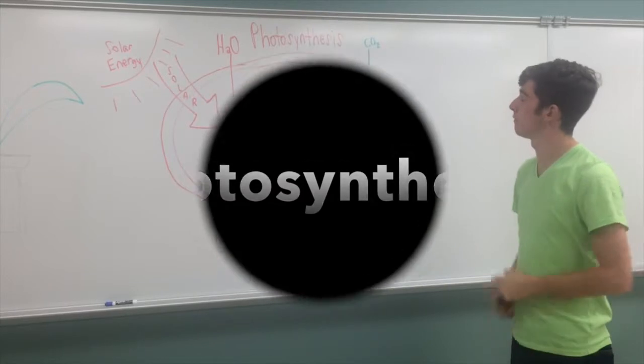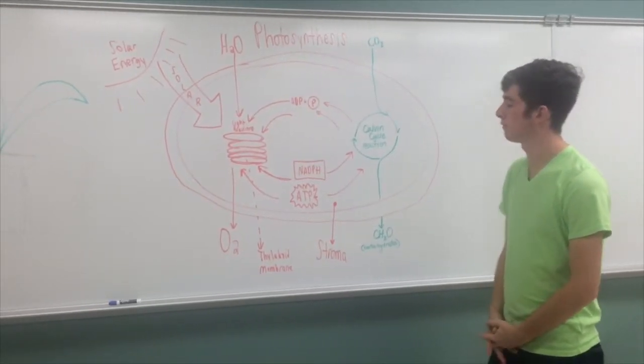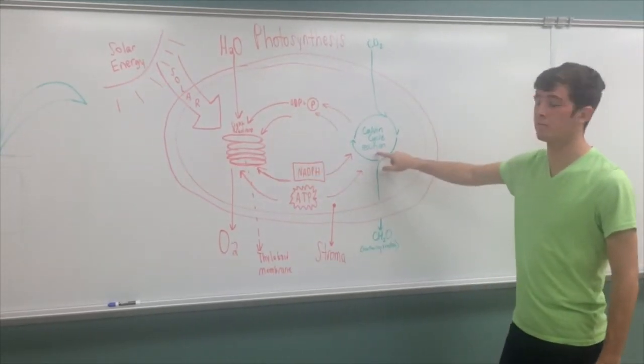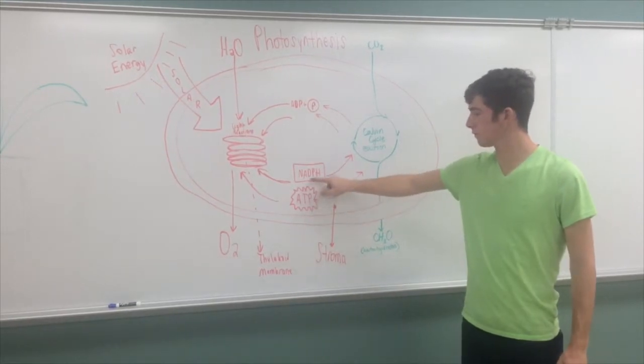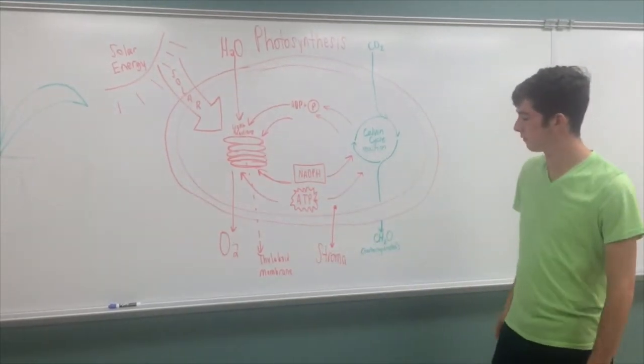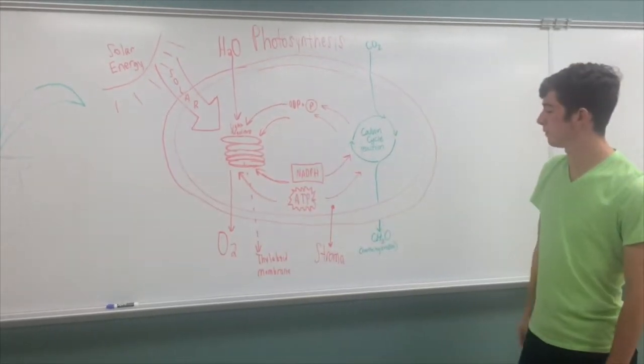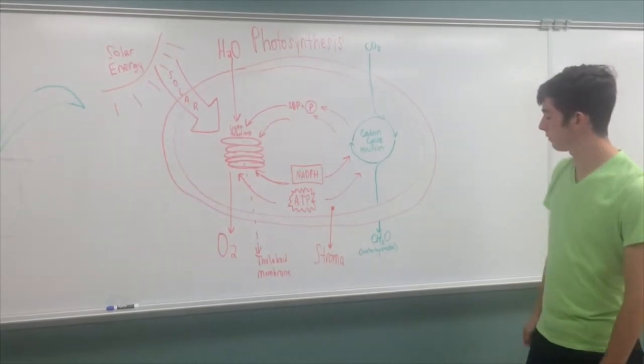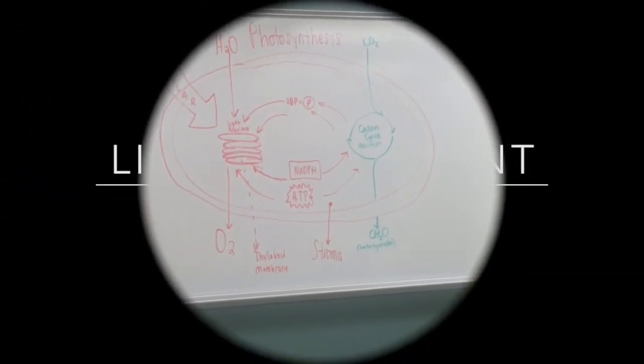The photosynthesis process consists of the light reactions and the Calvin cycle reactions. The light reactions which produce ATP and NADPH occur in the thylakoid membrane. These molecules are used by the Calvin cycle in the stroma to reduce carbon dioxide to carbohydrate. In this video we will go in depth about the light reactions and the Calvin cycle reaction.